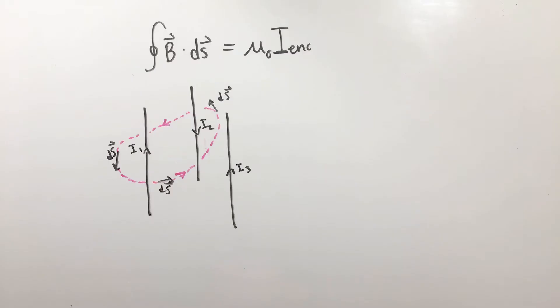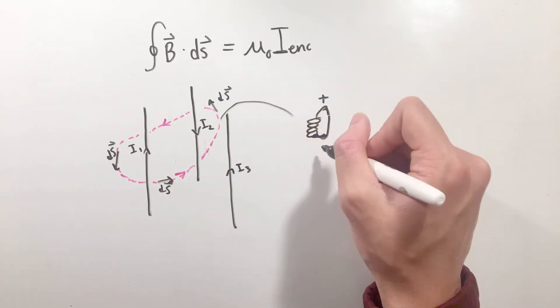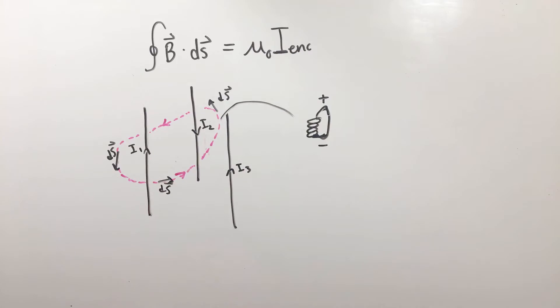The ds vector represents infinitesimal lengths of your loop. The current enclosed is based on the amount of current penetrating through your closed loop, where the sign of this current is determined by the right-hand rule.